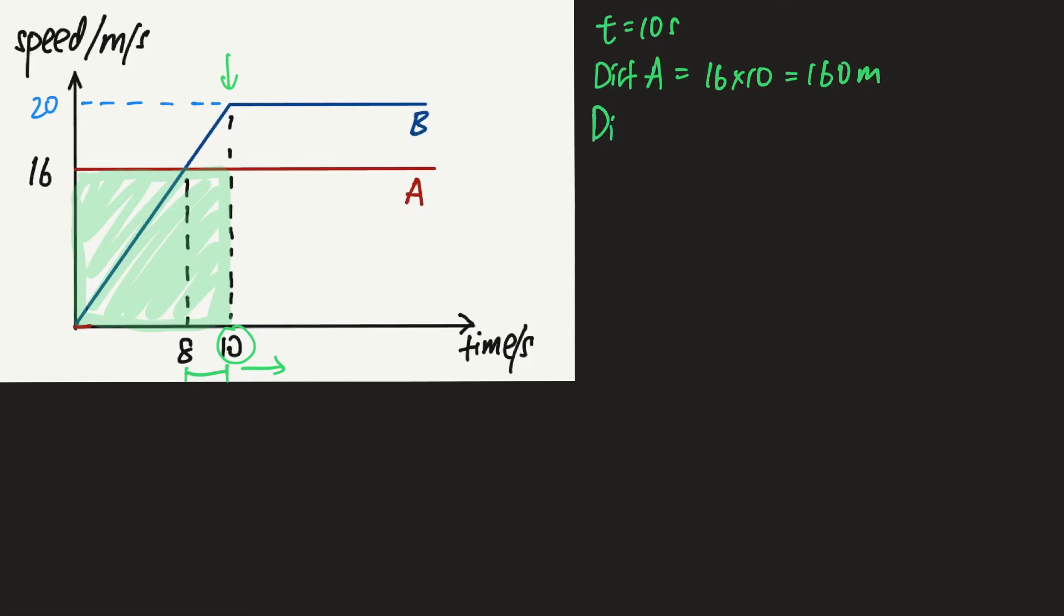Car A travels a distance of 160 meters from the starting point. How about distance traveled by car B? It will be the area underneath the graph, which is this triangle, so that will be half times base which is 10 times the height 20, and that will basically be 100 meters from the starting point. You can see that at time equals to 10 seconds, the distance traveled by car A is still greater than the distance traveled by car B, so all this while until 10 seconds car A has been in front of B, so the overtaking has not taken place yet.